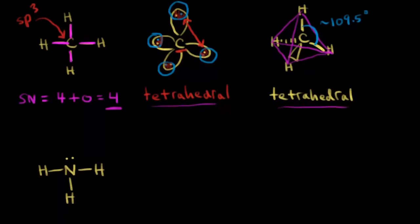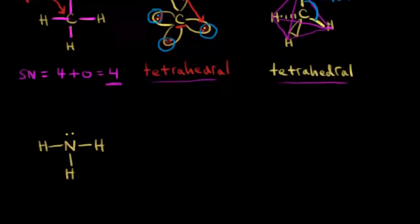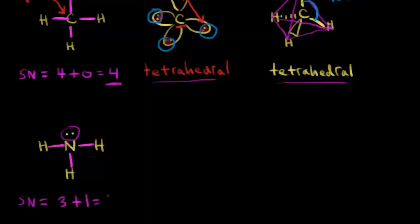Let's do the same analysis for ammonia, NH₃. The steric number is equal to the number of sigma bonds — that's one, two, three — so three sigma bonds, plus the number of lone pairs of electrons. I have one lone pair of electrons, so three plus one gives me a steric number of four. I need four hybridized orbitals, so this nitrogen must be sp3 hybridized, because sp3 hybridization gives us four hybrid orbitals.